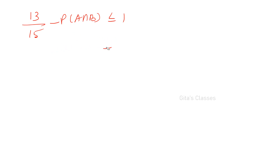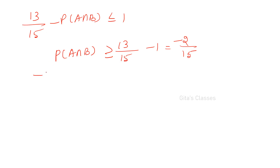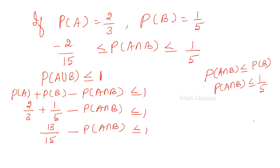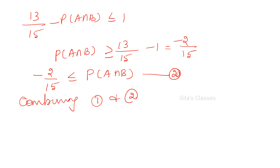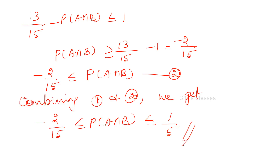Subtracting 13/15 from both sides: −P(A∩B) ≤ 1 − 13/15 = 2/15. Rearranging: P(A∩B) ≥ −2/15. Call this equation (1) and the earlier result equation (2). Combining (1) and (2): −2/15 ≤ P(A∩B) ≤ 1/5. This is what was asked.